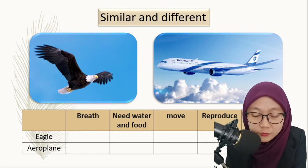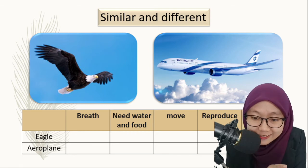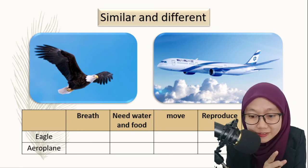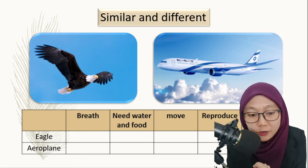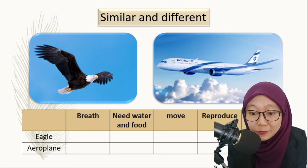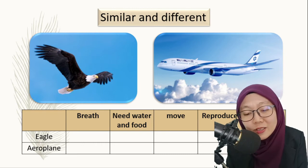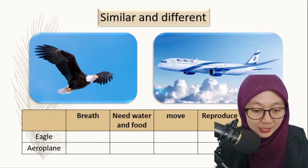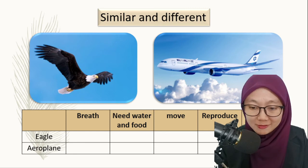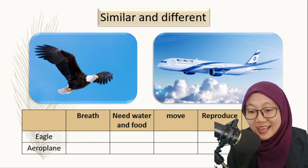Both can move — the aeroplane can move and the eagle also can move. But the difference is eagle is an animal and animals can reproduce. But can an aeroplane reproduce? No, an aeroplane cannot reproduce. Also, eagle can grow, but an aeroplane cannot.